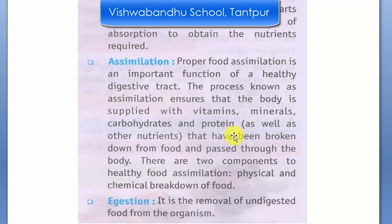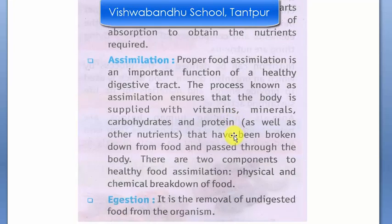Next is assimilation. What happens here is the liquid particles — very small vitamins, minerals, carbohydrates, proteins — these are different nutrients that are absorbed and broken down. After this, in the digestion process, these nutrients are used by the body.